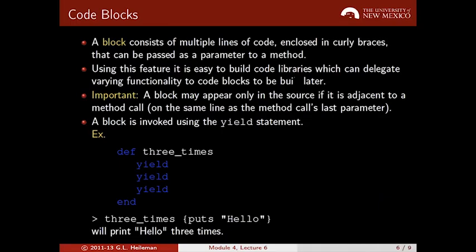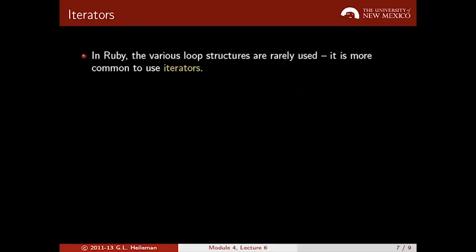So try this out. I encourage you again. Let me iterate what's happening here. This block of code is being passed into the method three_times, and the yield statement invokes that block of code, and it does it three times in this example.